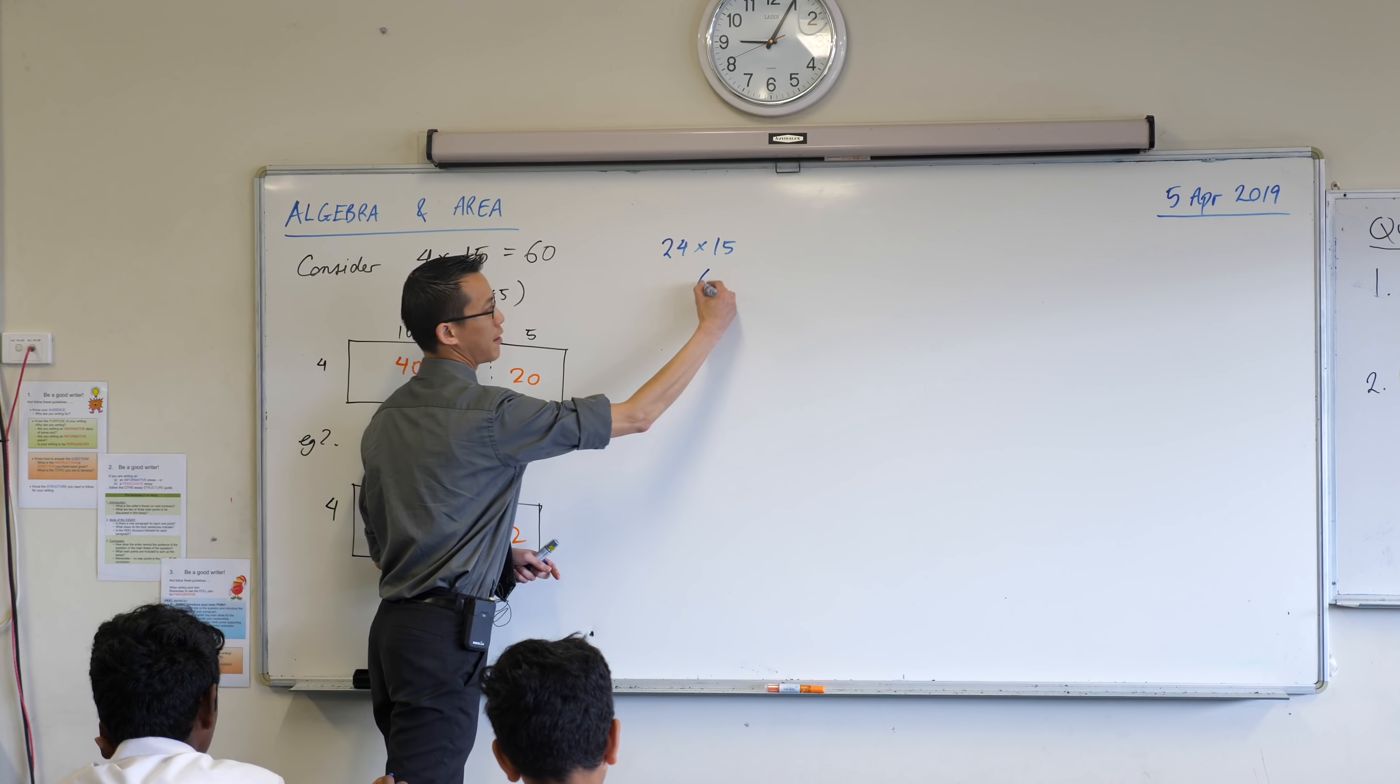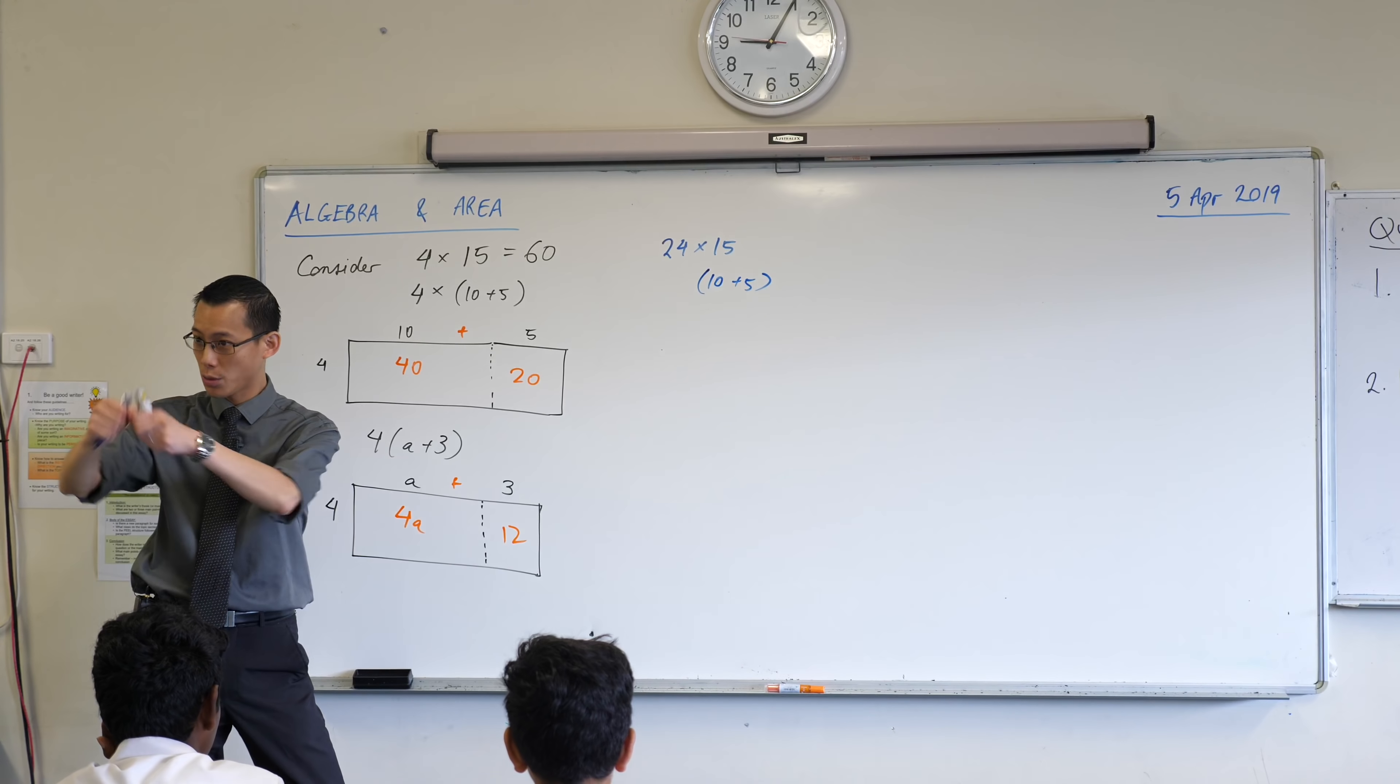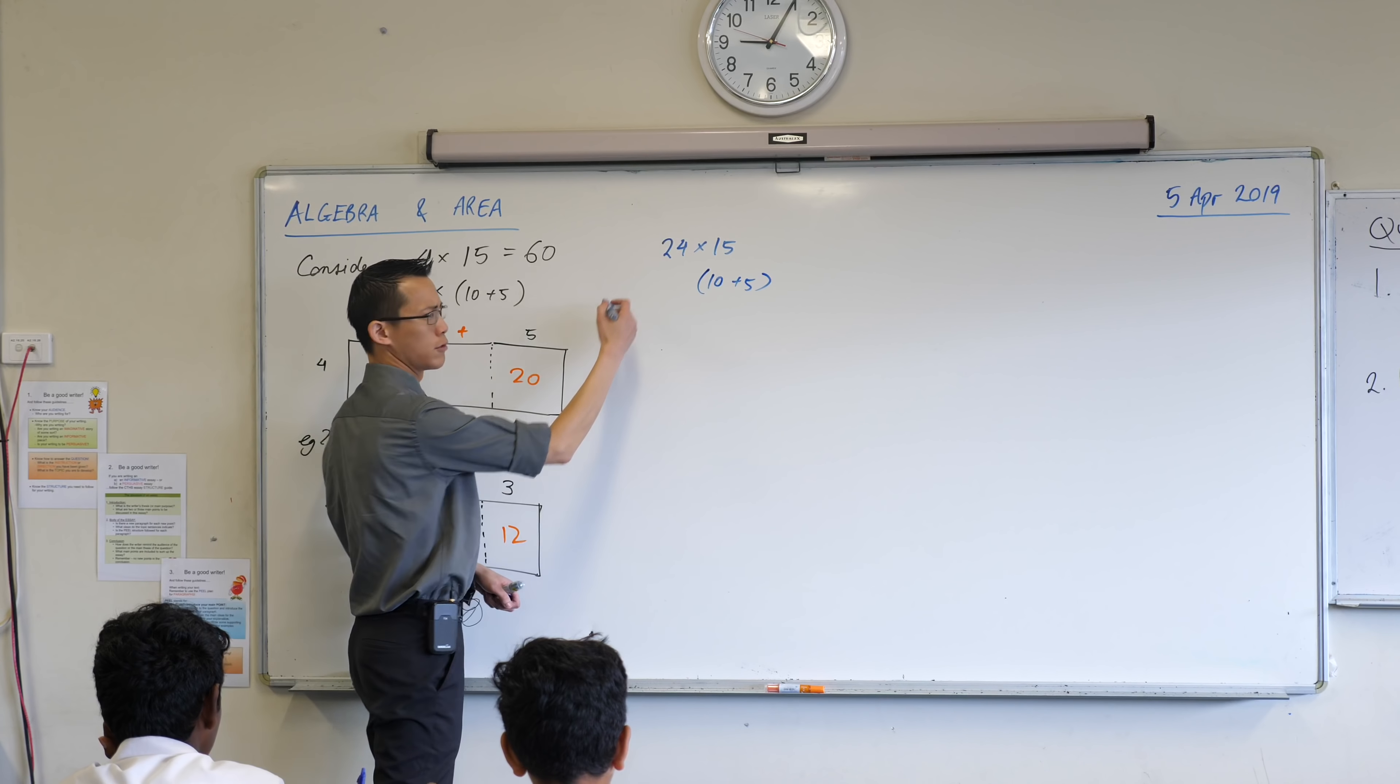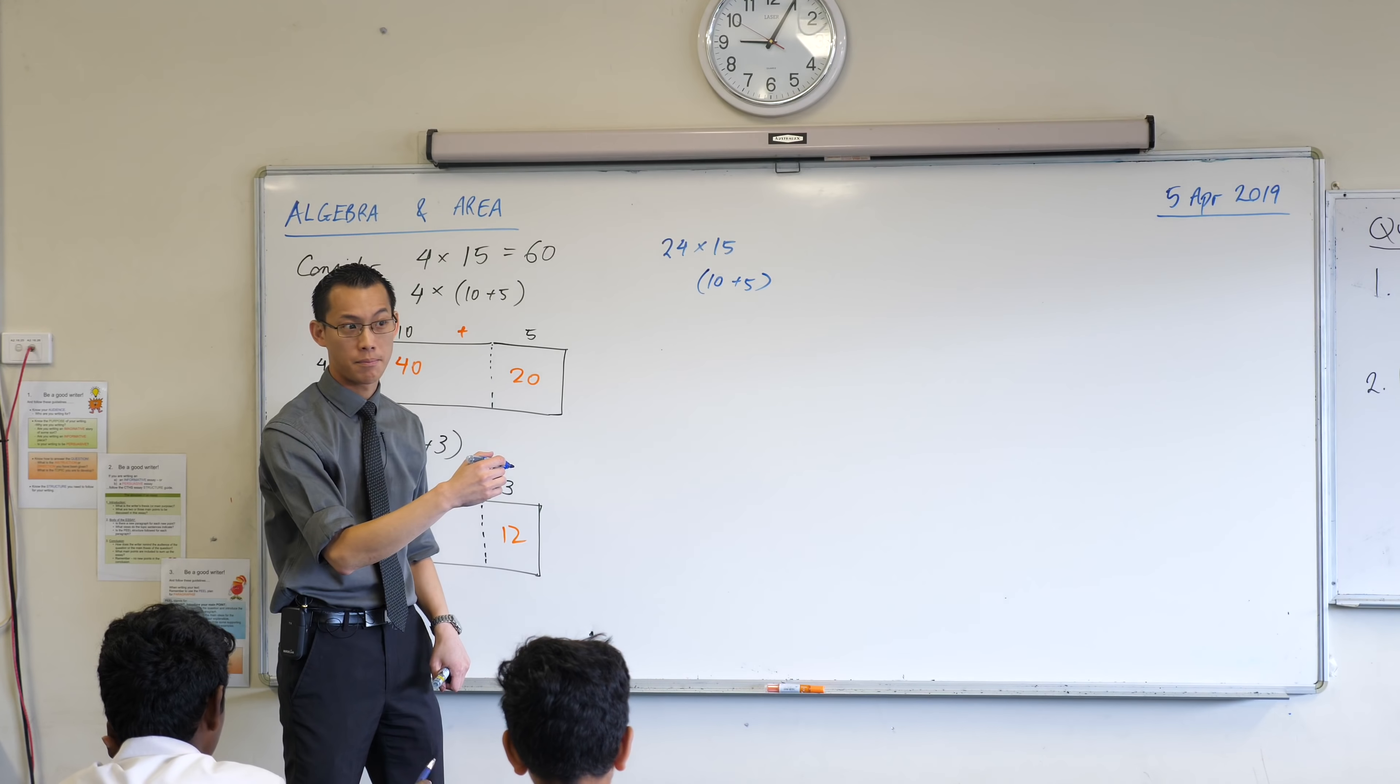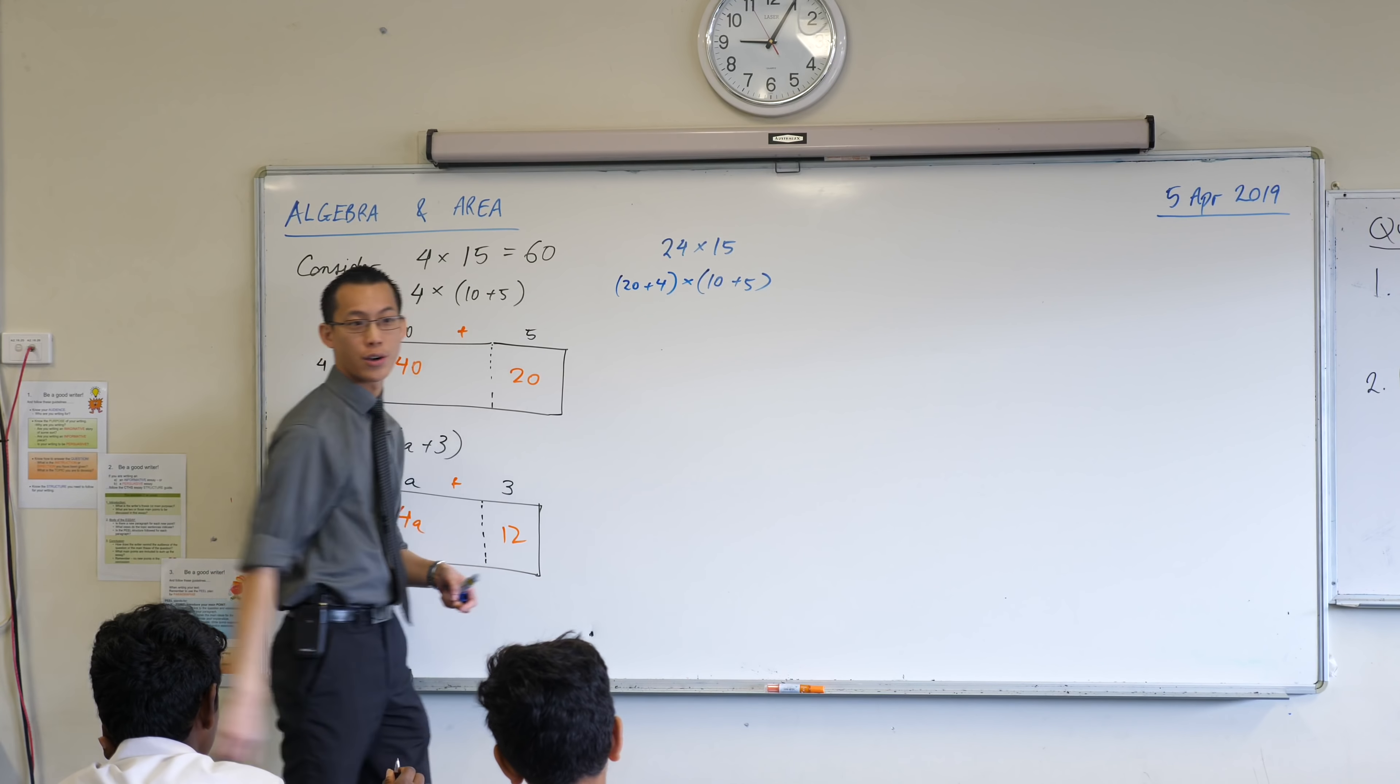But I can use that same model to help me out here. You know how I break apart the 15 into 10 and 5? I can also break apart the 24, right? It's, well, how am I going to break it out? 20 and 4. My 10's and my units. 20 plus 4, like so.